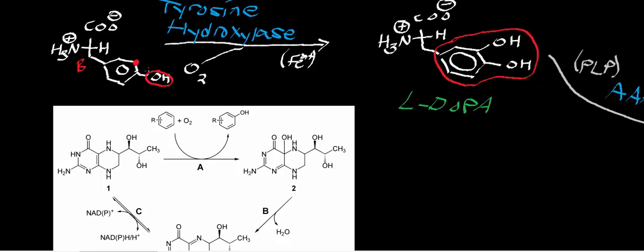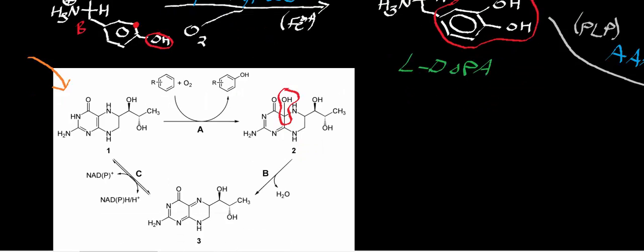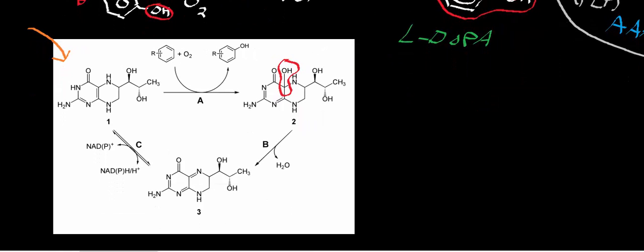One of the things that the iron does is it associates with a coenzyme called tetrahydrobiopterin, shown right here. Tetrahydrobiopterin is used to hydroxylate amino acids — we've already seen this coenzyme used in phenylalanine hydroxylase, and we'll also see it in tryptophan hydroxylase. One atom of molecular oxygen gets put on the position meta to the beta carbon, while the other atom gets incorporated into tetrahydrobiopterin at the 4-alpha position to give 4-alpha-hydroxy-tetrahydrobiopterin. Since that form is of no use, we regenerate the resting state tetrahydrobiopterin in two steps.